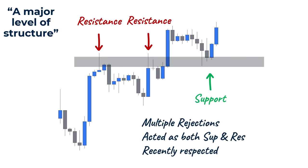Our next step is to wait for the price to test the key level of structure, then zoom in to a lower timeframe to execute our trade. On the lower timeframe, we will look for a valid double bottom pattern to indicate a potential reversal. Once the price breaks the neckline and completes the double bottom pattern, we apply the retracement tool from the start of the move to the end and place our buying order precisely at the 61.8% retracement level, with the stop loss below the swing low, targeting the next level of market structure on the higher timeframe.